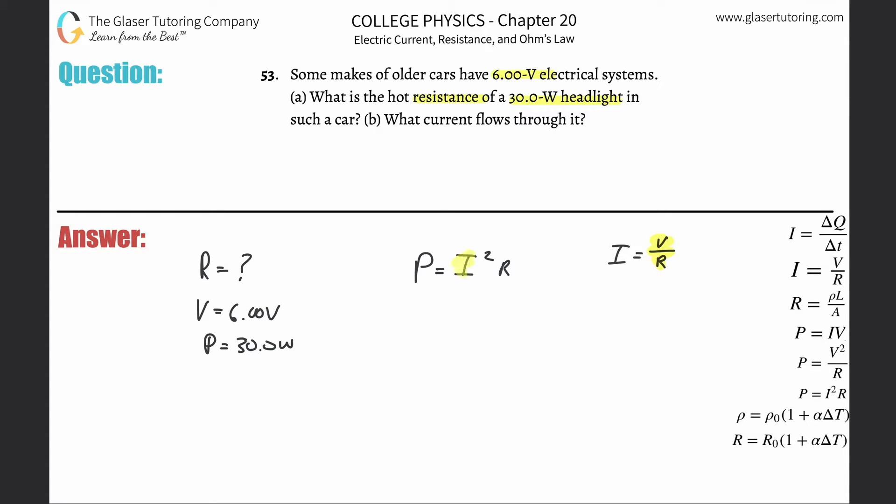Now when that happens, notice we're going to get V over R all squared times R. Or in other words, this will work out to be V² divided by... this is really squared on the bottom and that R is raised to the first, so that R will cancel. And I'm only left with one R in the denominator.